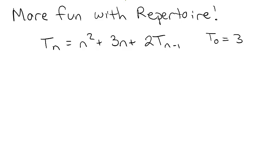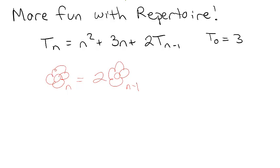Basically what we need to do is think: if I had some function — call it flower — then flower sub n is going to equal twice the previous flower. So we need something that captures that doubling behavior. After some thought, desperation, and tears — which is what you've got to do to be good at algebra — you come around to: clearly, if I have something to a power, that's going to double it every time. So we need a 2^n in our repertoire.